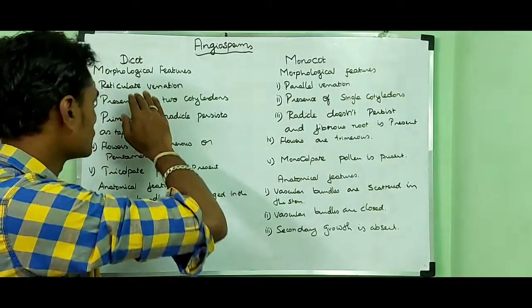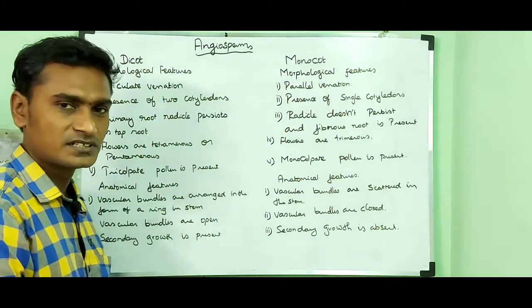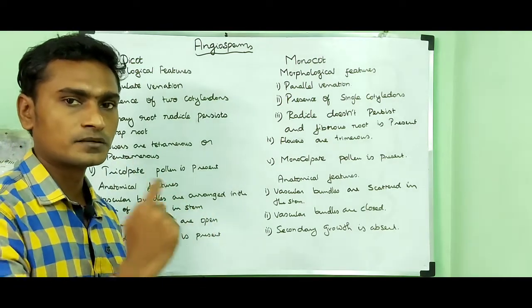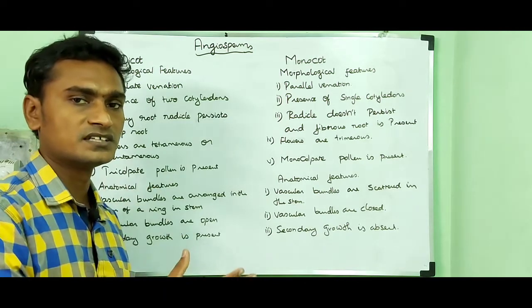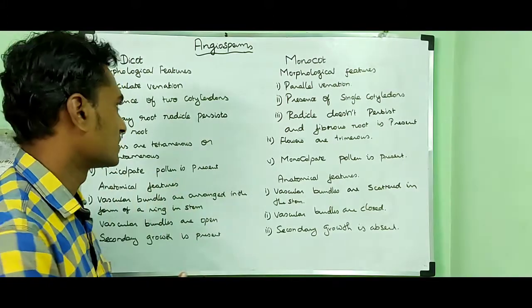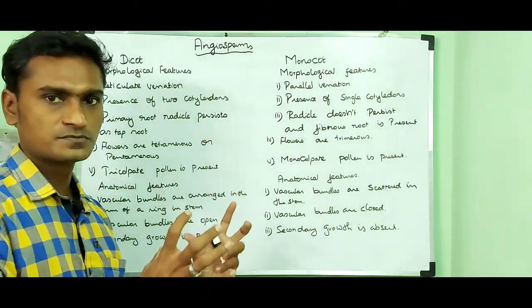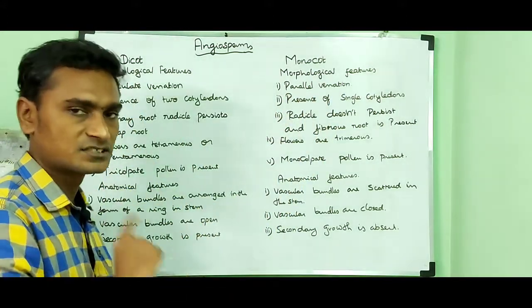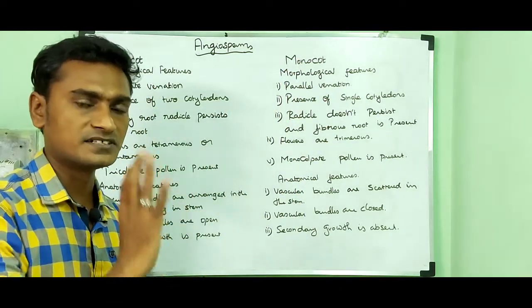The leaf shows reticulate venation in dicots. In monocots it shows parallel venation. Reticulate venation means a network of venation. If you want to identify a dicot or monocot plant, look at the leaf — if it shows reticulate venation it is dicot, if it shows parallel venation it is monocot. Parallel venation means the veins run parallel to each other, as seen in a grass leaf.